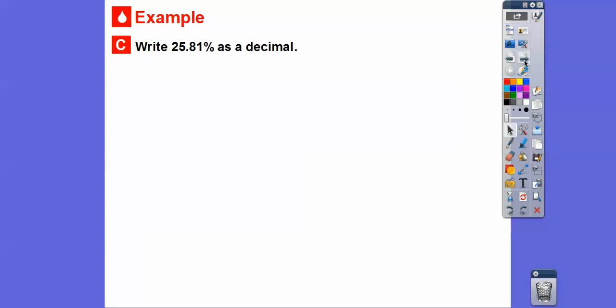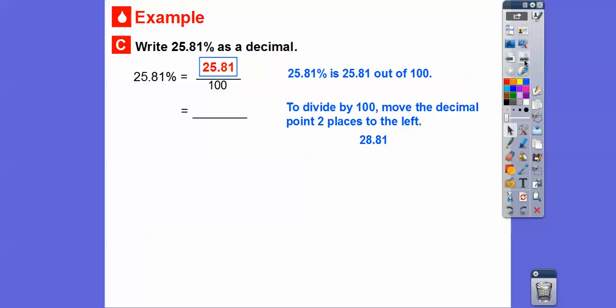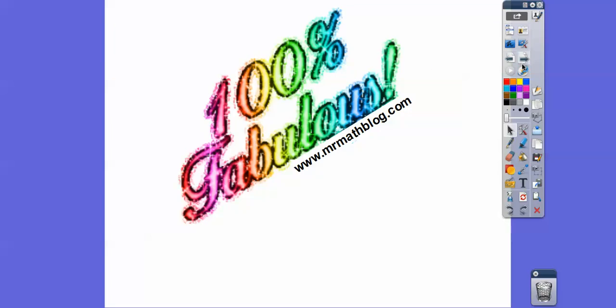How about this one? Write 25.81% as a decimal. Well, 25.81% is 25.81 out of 100 right there. So that's what goes inside of that box. Now we can't have a decimal inside a fraction right there. So what we're going to do is divide by 100, move the decimal two places to the left. So we're going to take this decimal and just move it one, two places to the left right there. So here it is right there. And then so we've got to put a 0 out here, so it becomes 0.2581. So 25.81% is the same as 0.2581. All right you guys, I hope that makes sense, and take care.